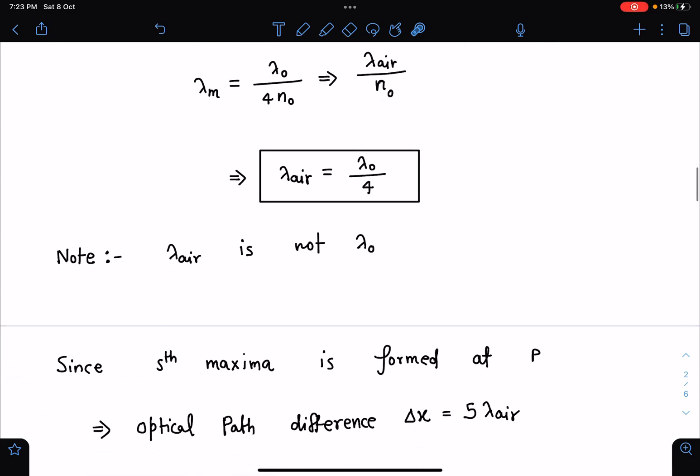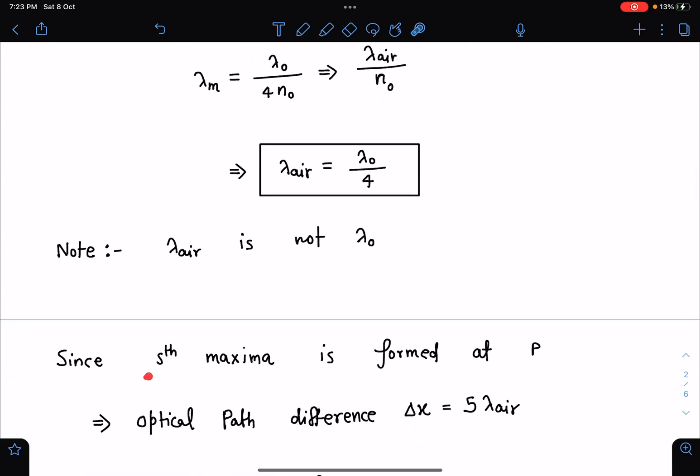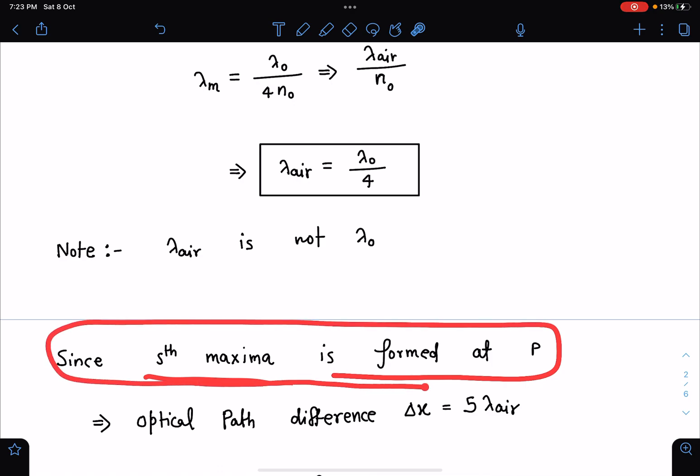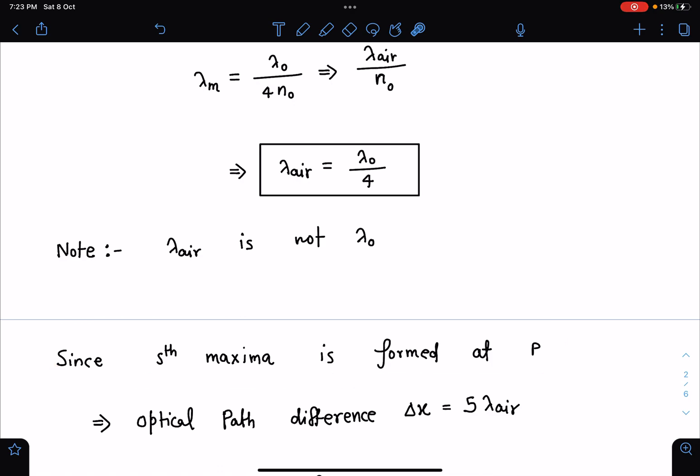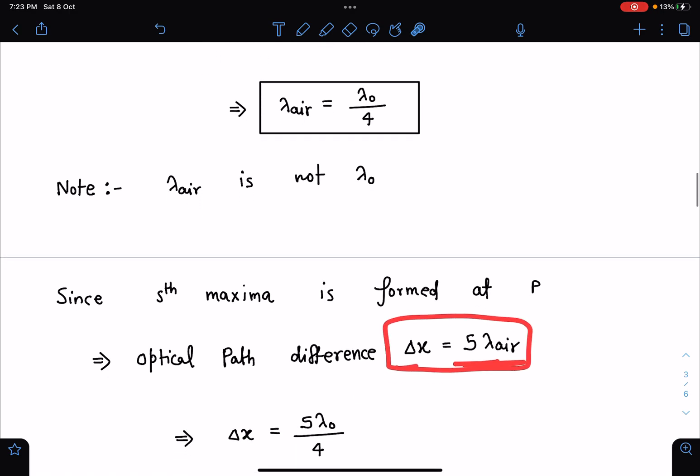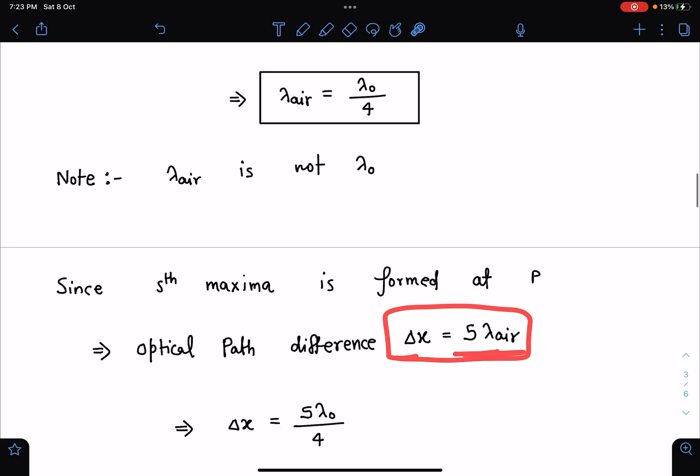Now again here, since fifth maxima is formed at point P, it is given that fifth maxima is formed. So we can write optical path difference at that point P is 5 times lambda air. Now when we talk about optical, we talk about air or vacuum in that case. So this will become wavelength in the air, so 5 lambda air. And we have delta x as 5 times lambda in air, which is lambda 0 by 4. So this is given to us, 5 lambda 0 by 4 is the path difference.